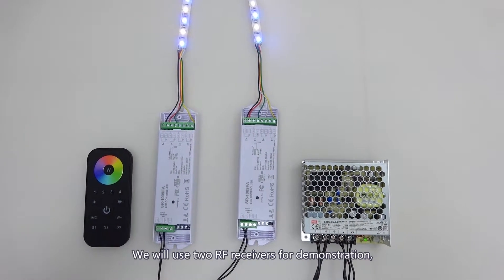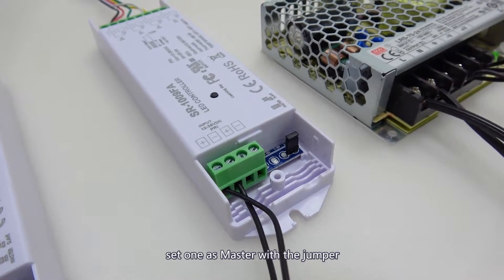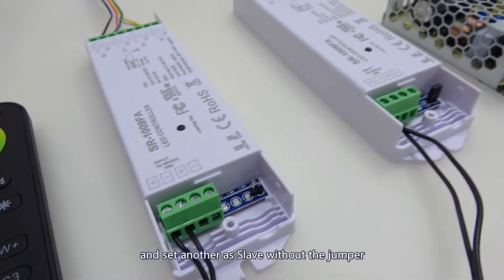We will use two RF receivers for demonstration. Set one as master with the jumper and set another as slave without the jumper.